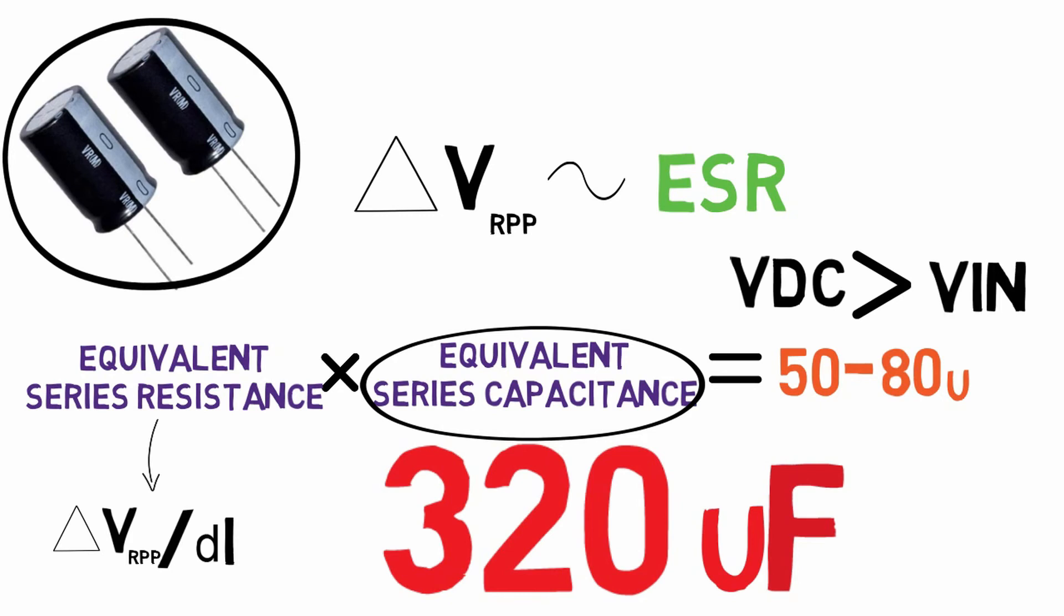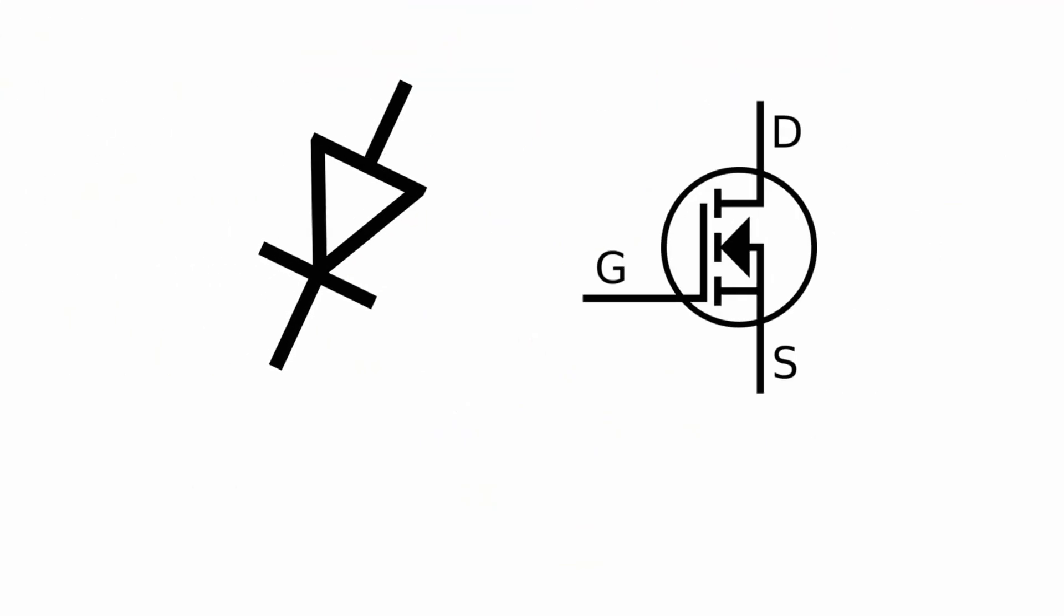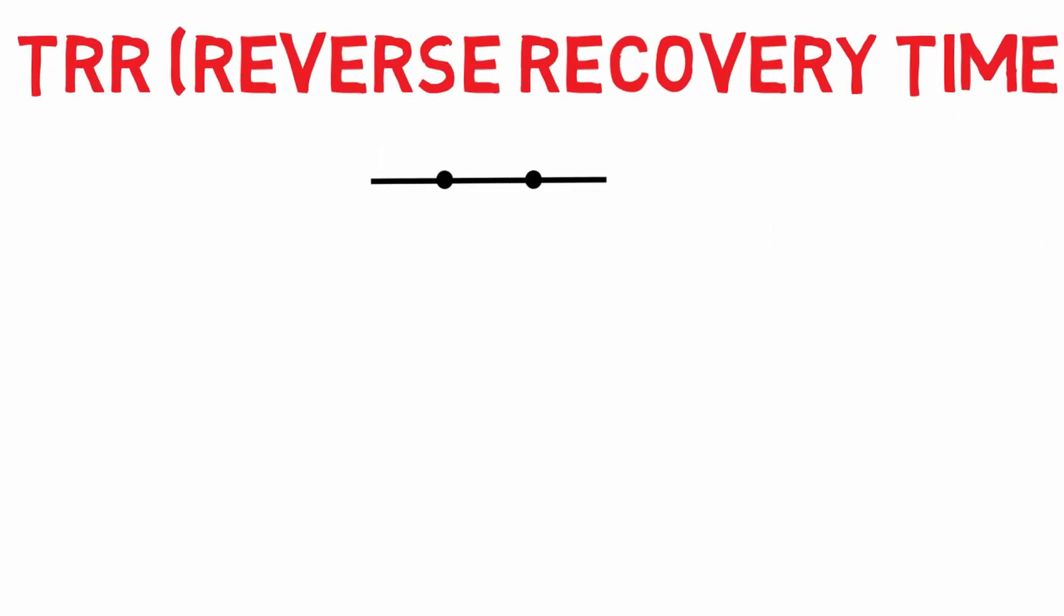And operating voltage of the capacitor should be greater than that of input voltage. Hence we can take 320 microfarad capacitors rated to 50 volt. Now we need to select the rectifier diode and switching transistor. Diode should be selected considering first trr, which is reverse recovery time. When diode jumps from conducting state to blocking state, the diode contains a charge and that charge must be discharged before the diode blocks the reverse current.